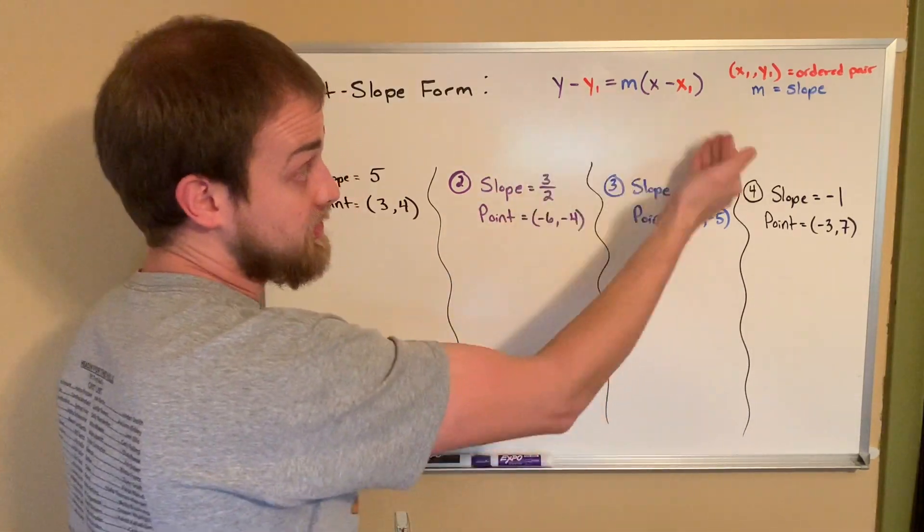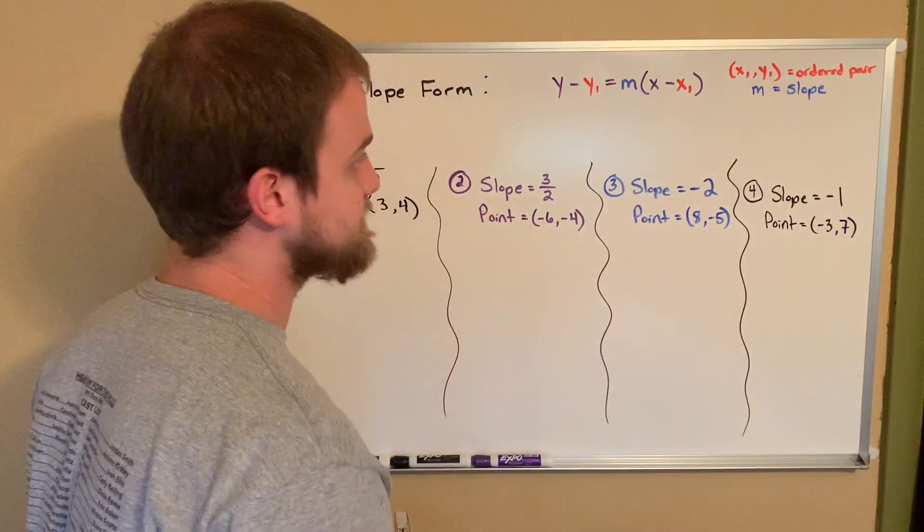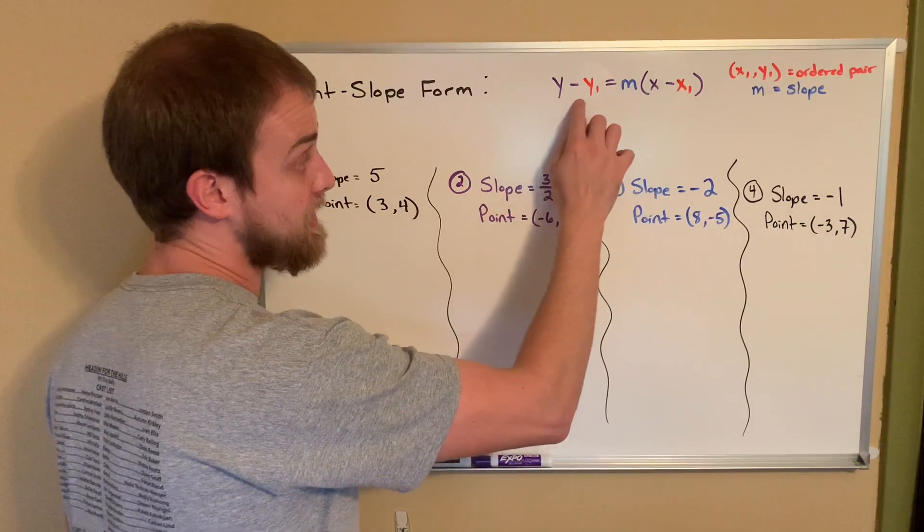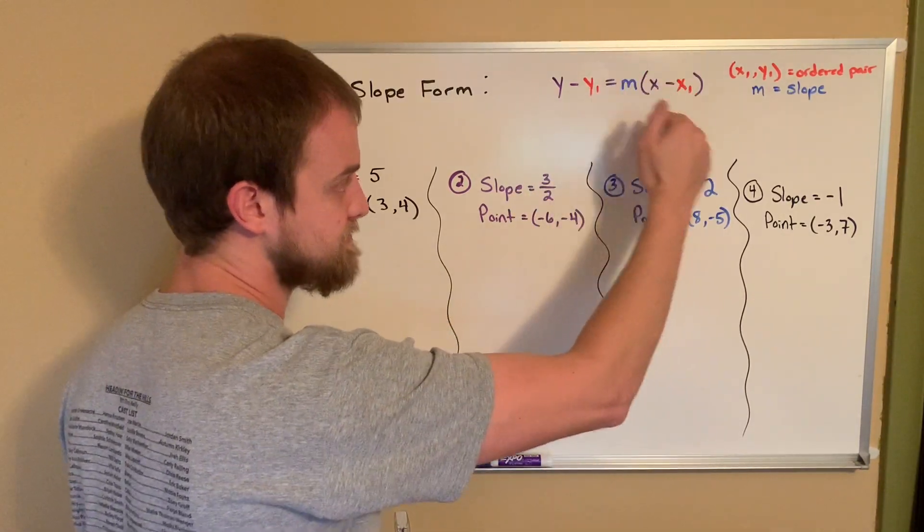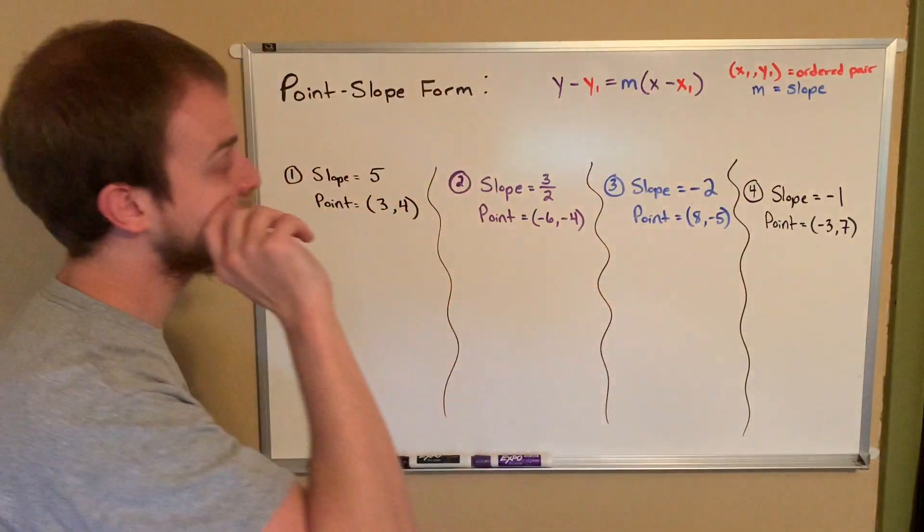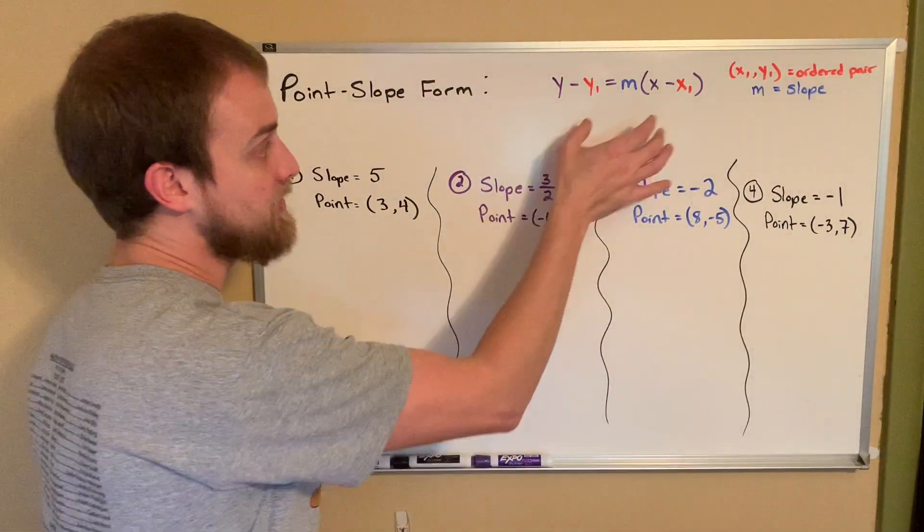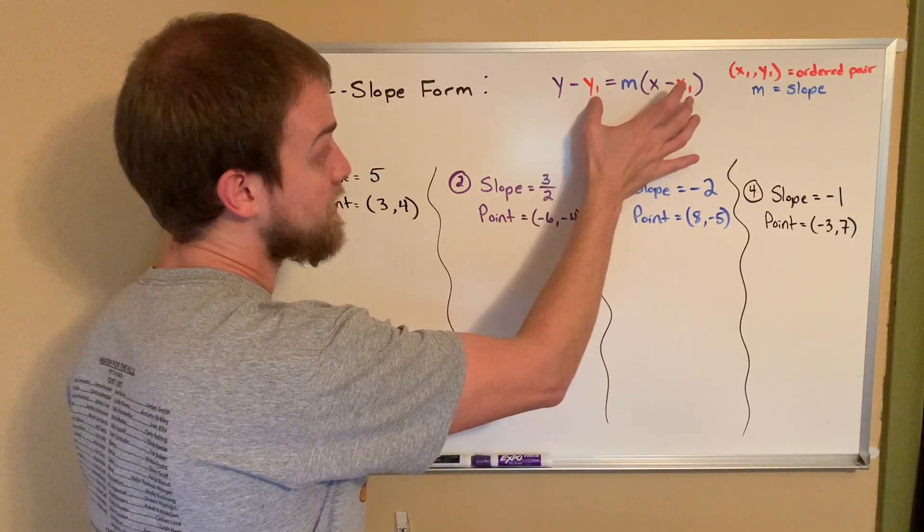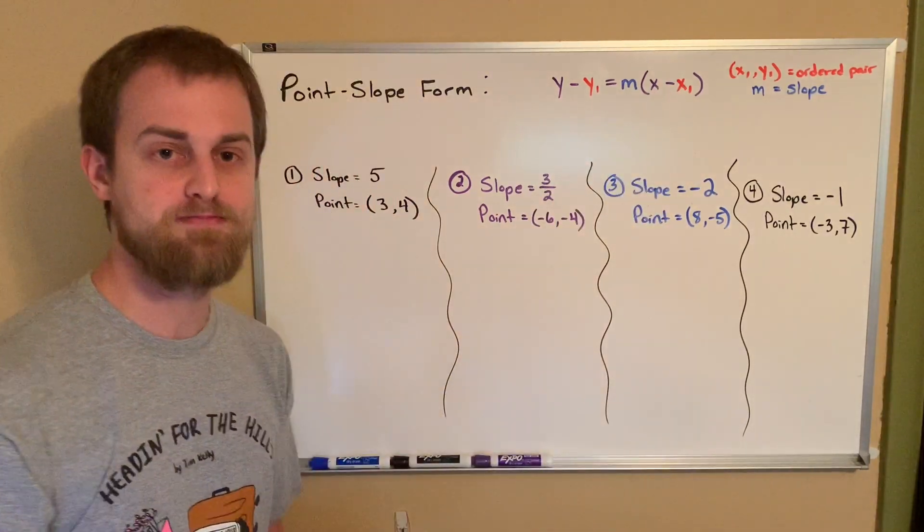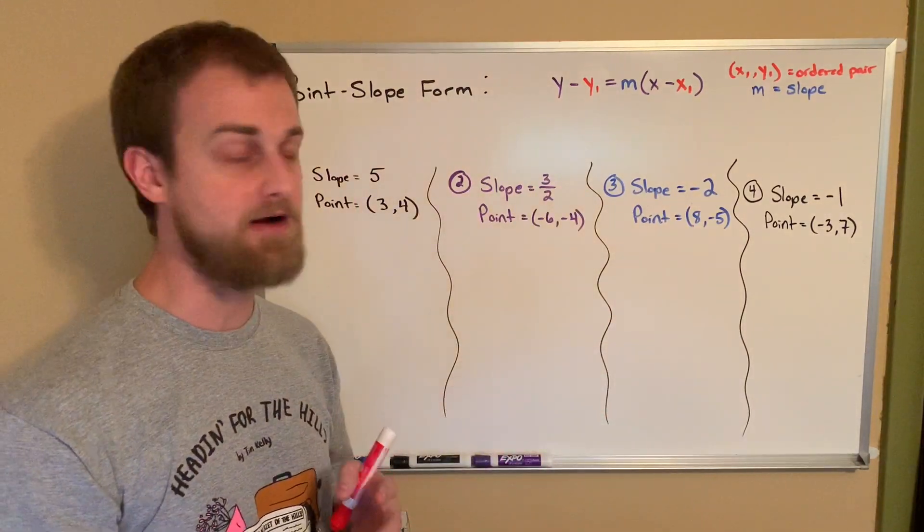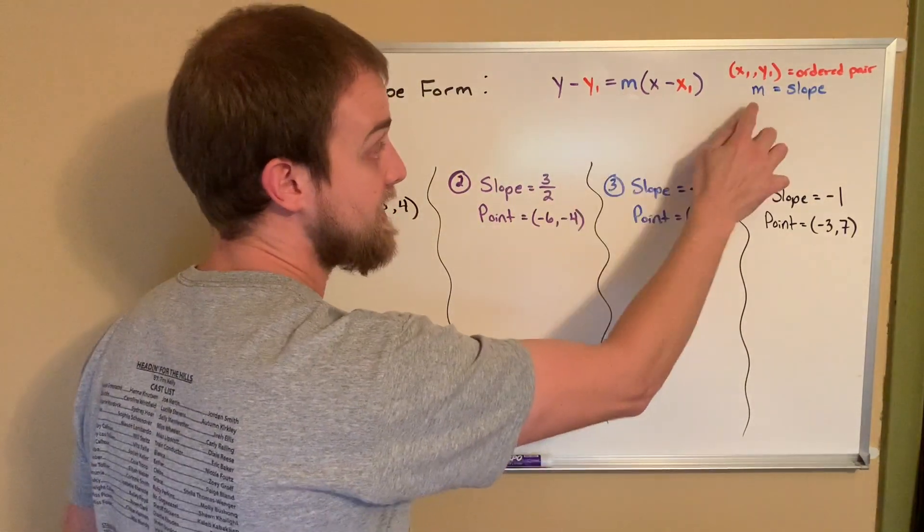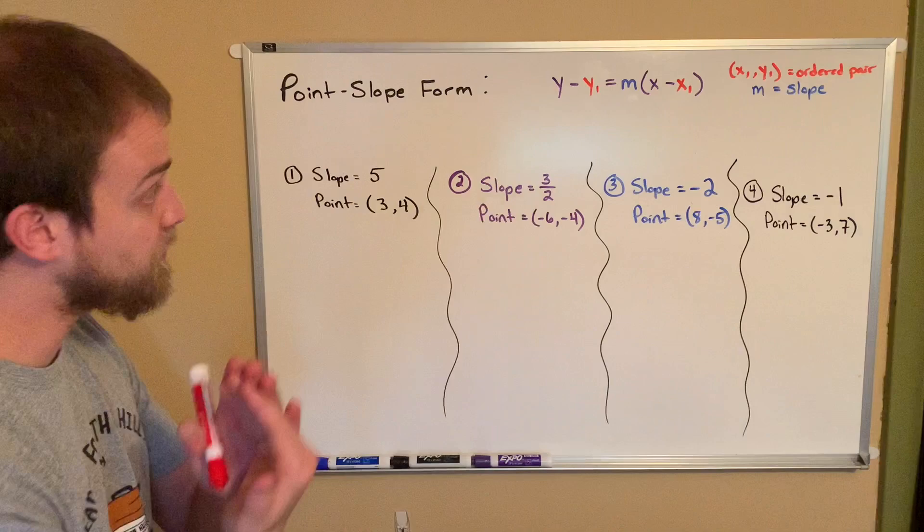Our formula, or our general equation for point-slope form is y minus y sub 1 equals m times the quantity of x minus x sub 1. And what you'll notice is this x sub 1 and y sub 1, that is where our ordered pair comes from. So from this equation, we'll be able to pull out an ordered pair. In blue, here I have m, which is our slope, and we'll be able to pull that out as well.